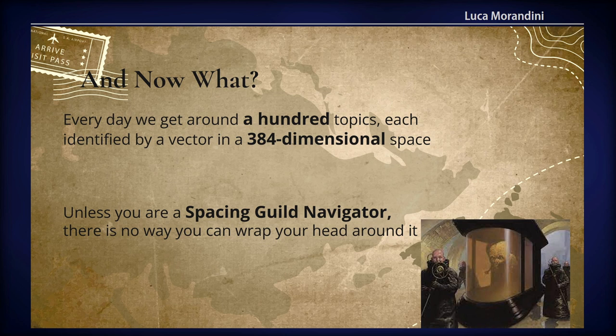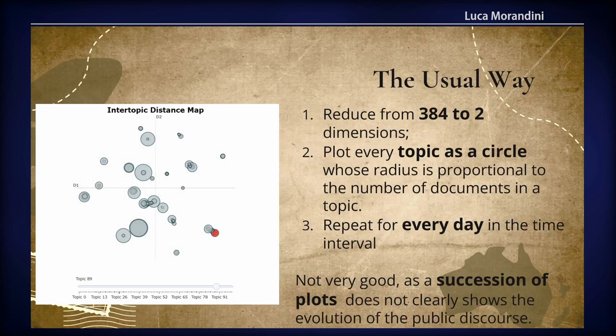There is one problem, though: how do you visualize these topics? Each topic is a vector in 384 dimensions, which means that unless you are a Spacing Guild navigator, you cannot conceptualize that. Traditionally, the approach has been to reduce the number of dimensions from 384 to 2, and then plot them.